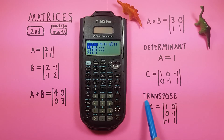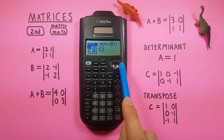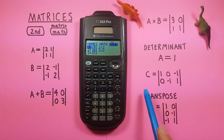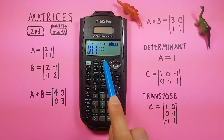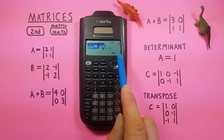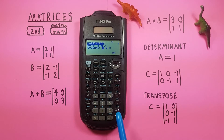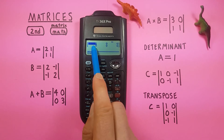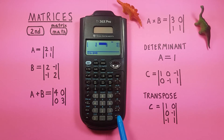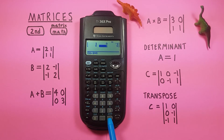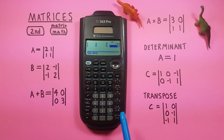Now let's look at transposing a matrix. For this example we'll enter a new, slightly more complicated matrix — a two row, three column matrix stored in C. Go to the edit screen, scroll down to C, select two rows and three columns, and press enter. Fill in the values: one, zero, negative one, zero, negative one, and one.